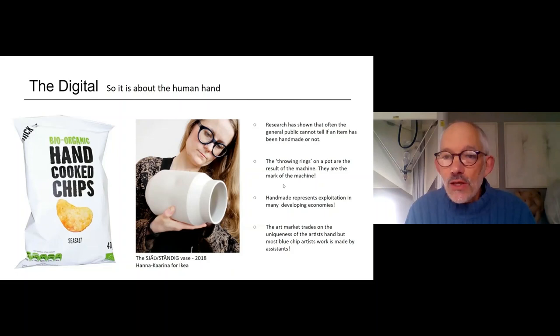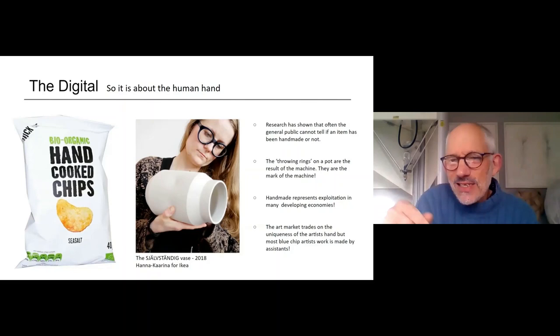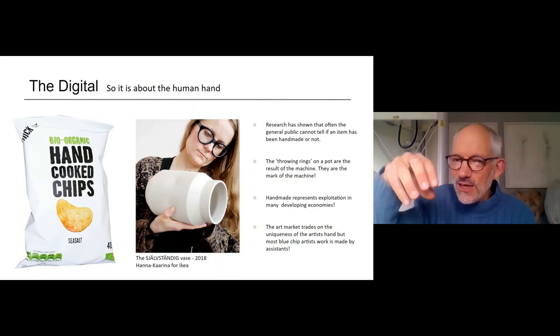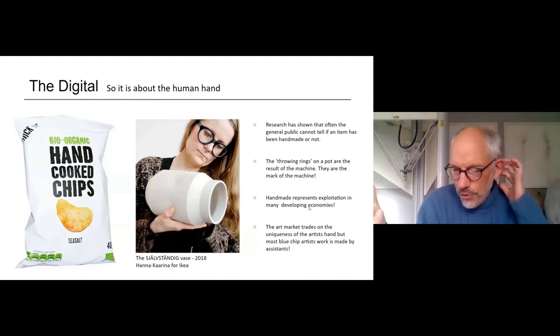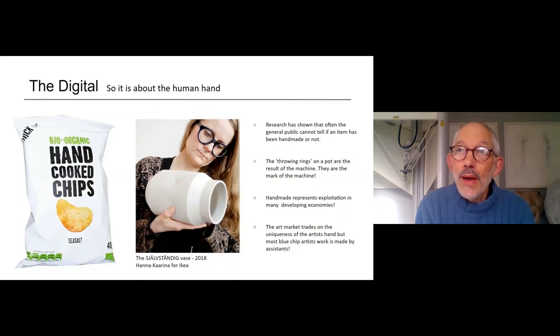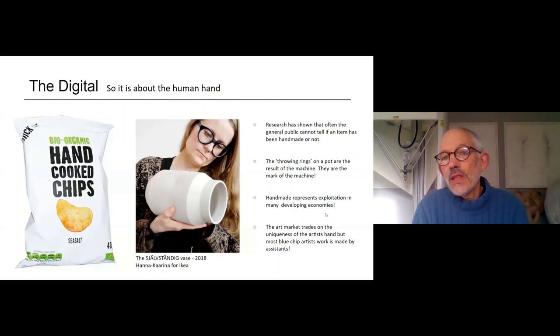Thinking about throwing rings: the idea that 'look, it's been handmade — you can see the throwing rings on it.' Yes, it's the hand on the object, but in actual fact it's a machine result, because it's been turning on a machine and then you put your hand there. So it's a machine mark as much as it is a hand mark. Coming from South Africa, from an ethical point of view, the idea of the handmade is very much a luxury object — in developing worlds, handmade is often seen as close to exploitative as well.